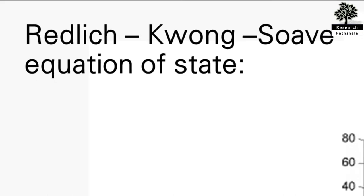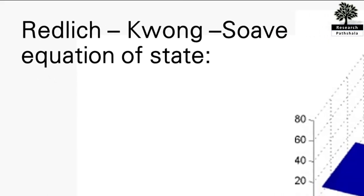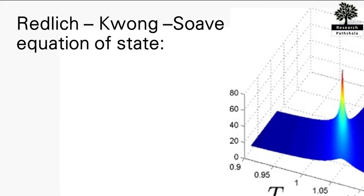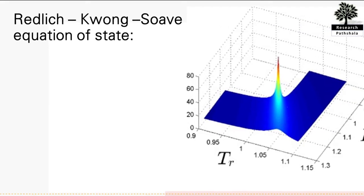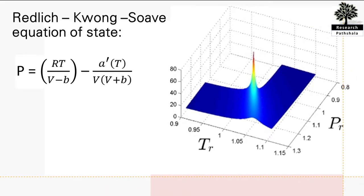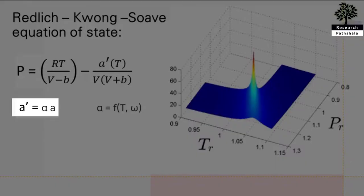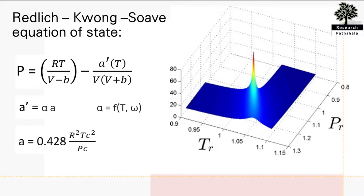Similarly, the Redlich-Kwong-Soave equation of state is a slight modification of the Redlich-Kwong equation. The equation is given as: P = RT/(V - b) - a'(T)/(V(V + b)), where a' = α × a, and α is a function of temperature and ω. Here a and b are functions of critical temperature and pressure.